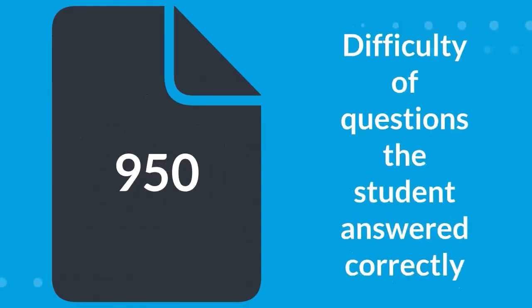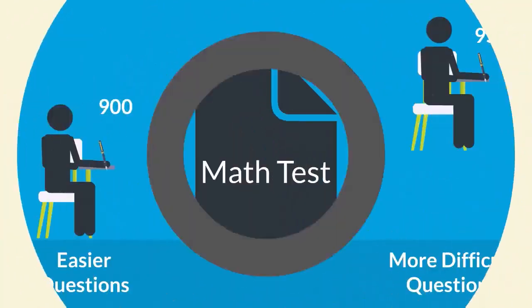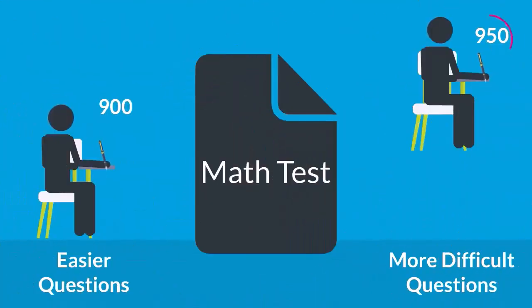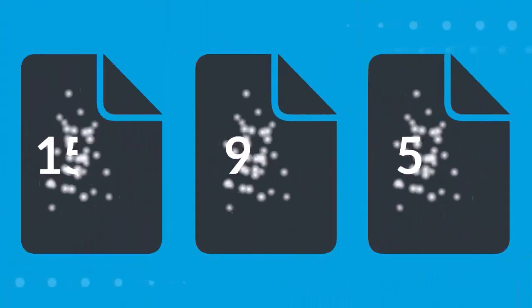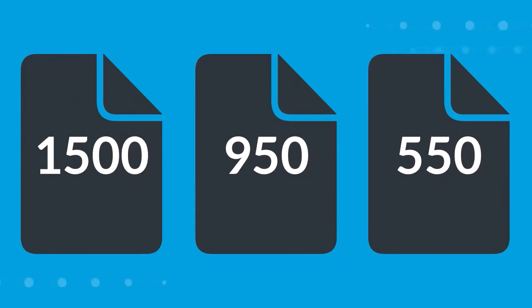Then, when a student takes a test, the scale score reflects the difficulty of questions the student answered correctly. Students that answer more difficult questions correctly will have a higher scale score. Many tests use scale scores. Although the specific numbers of the scale are different for different testing programs, scale scores are built essentially in the same way.